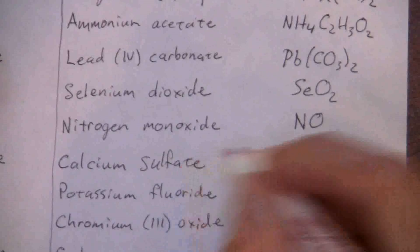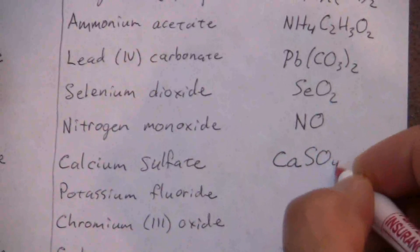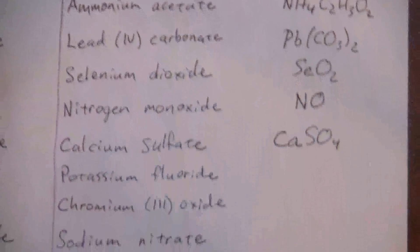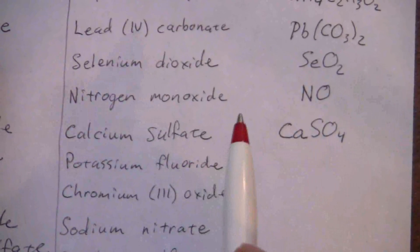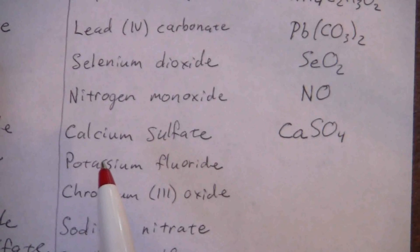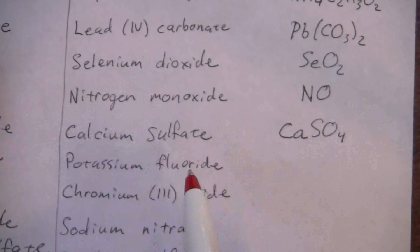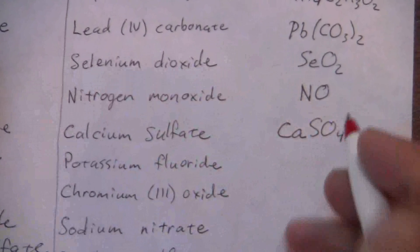Potassium fluoride - potassium is in the first group, it's an alkali metal. Fluoride is a halogen so it has a negative one charge. Positive one, negative one - they balance out one to one, so that's just KF.